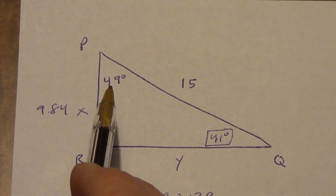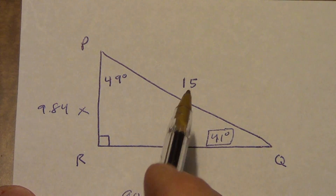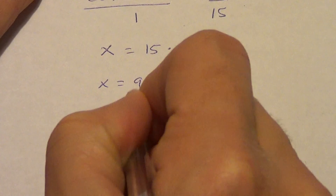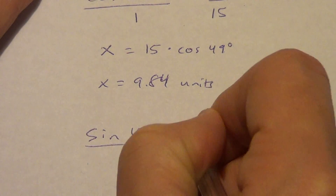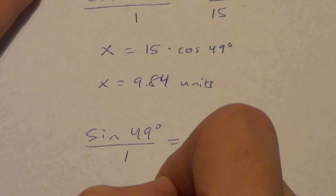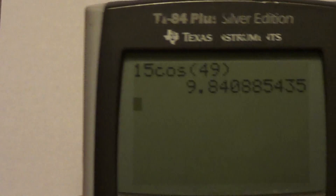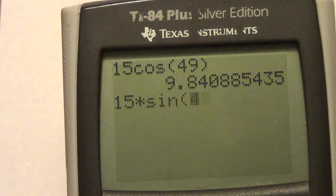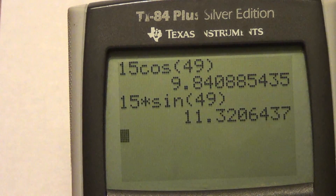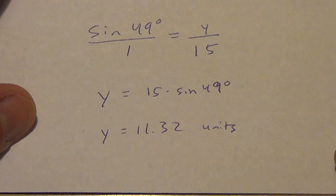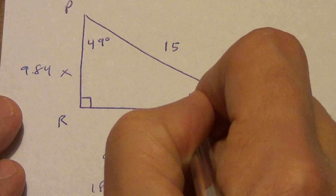I'm not using that 41 degrees or the Pythagorean theorem with the rounded value to find Y. Instead, Y is the opposite side and 15 is still the hypotenuse — that's sine. So the sine of 49 degrees over 1 equals Y over 15. Cross-multiplying: Y equals 15 times sine of 49 degrees. Typing that in: Y equals 11.32 units.